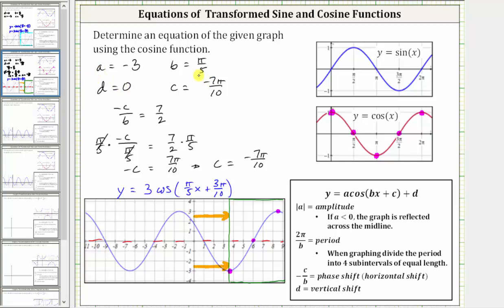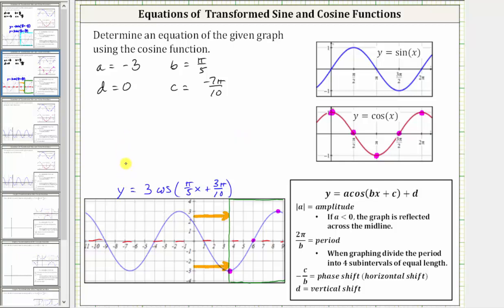Now we can use these values for a, b, c, and d to determine a different equation that will give us the same graph. A second possible equation using a negative value for a is y equals negative three times cosine of the quantity pi over five times x minus seven pi over ten. Again, d is zero. So both of these equations will produce the same graph shown. I hope you found this helpful.